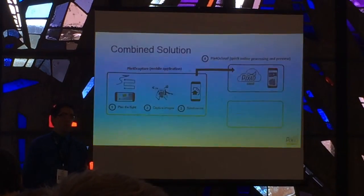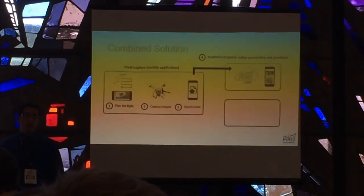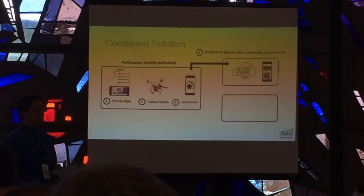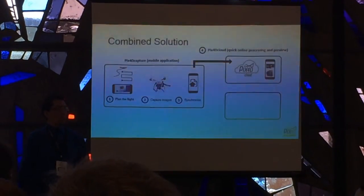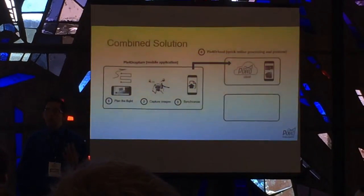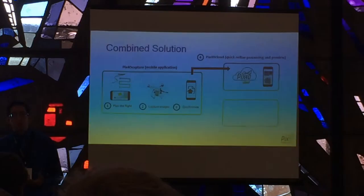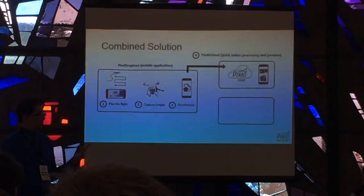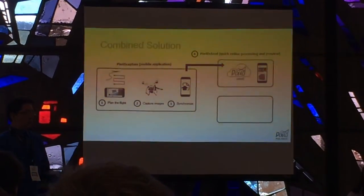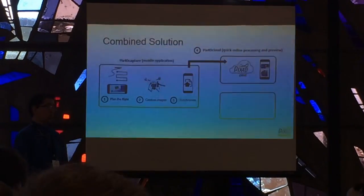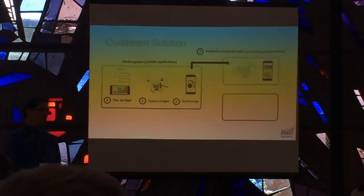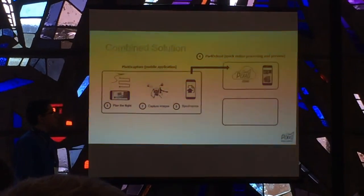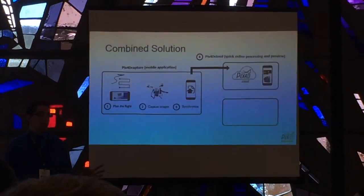You can do the processing one of two ways. One is the PIX4D Cloud, which is available for the mobile device. It is a low-res, rapid processing, which you can do in the field if you have cell phone service or internet service. You'll essentially be able to have a preview of your digital surface model, your orthomosaic, and your 3D model, and this is something that you can access online.